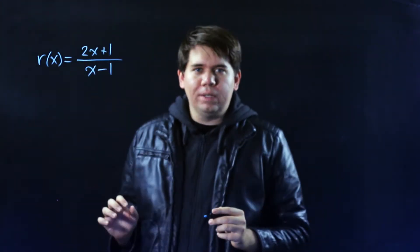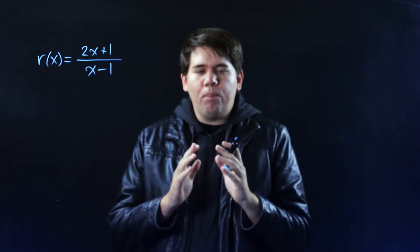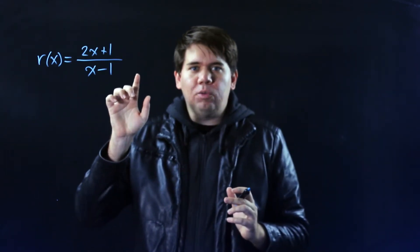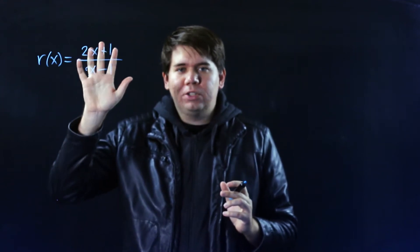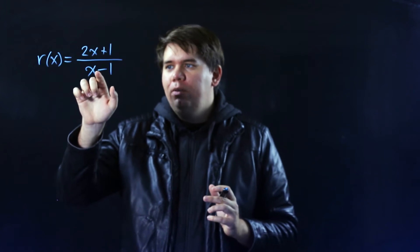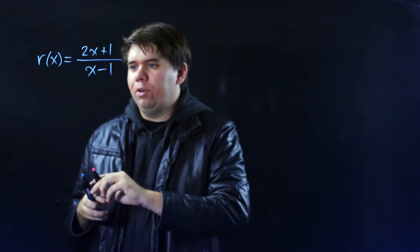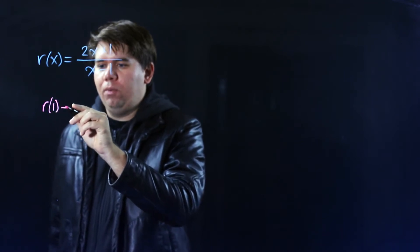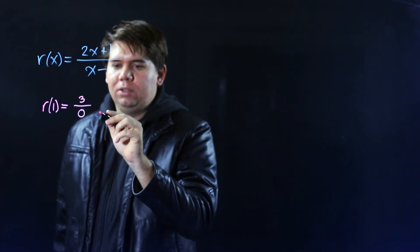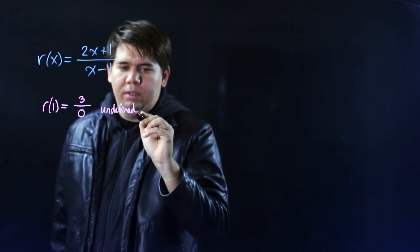When you look at rational functions you should immediately remember that they're not defined everywhere — there are some points where things go bad. For example, if you plug in x = 1 into this rational function, on the bottom you'd be dividing by zero: 1 minus 1 is zero. On top you'd have 3, so the function would be undefined.